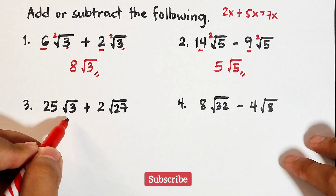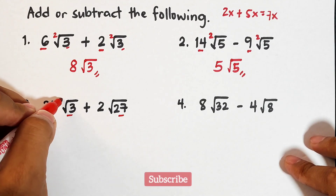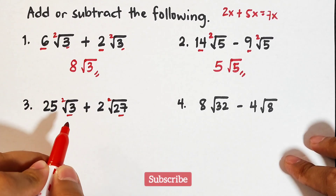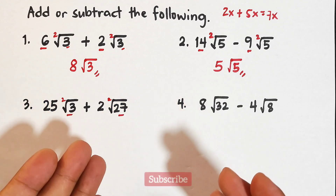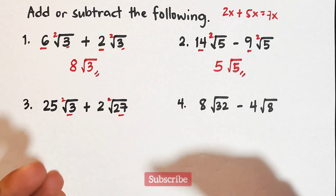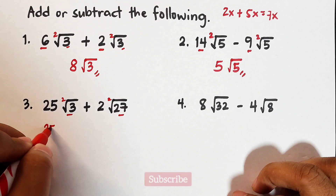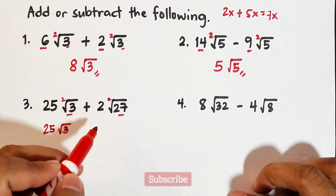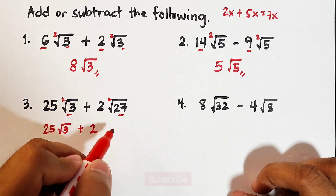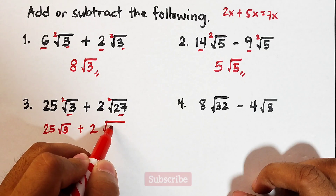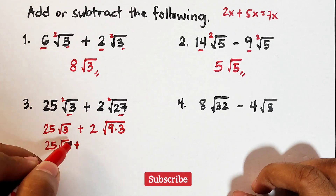For number 3, we have 25 square root of 3 plus 2 square root of 27. The problem is these radicals are not the same — though they have the same index, they don't have the same radicand. So we need to simplify one of them. The square root of 3 cannot be simplified, so we copy that term: 25 square root of 3.